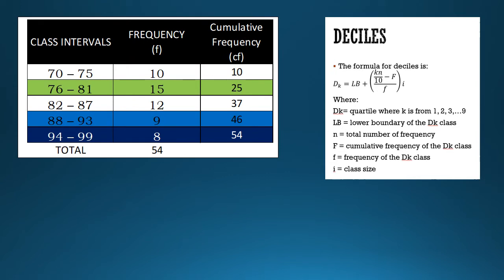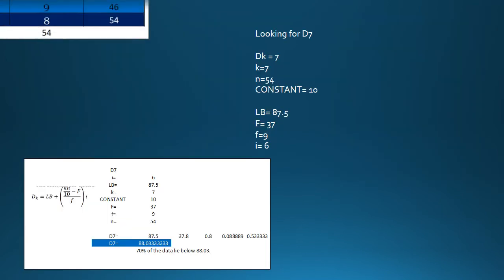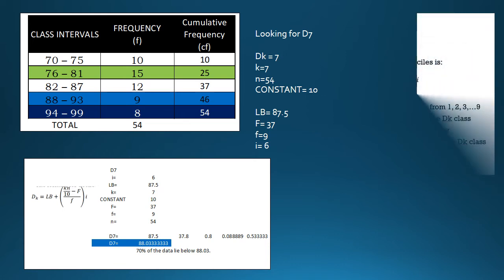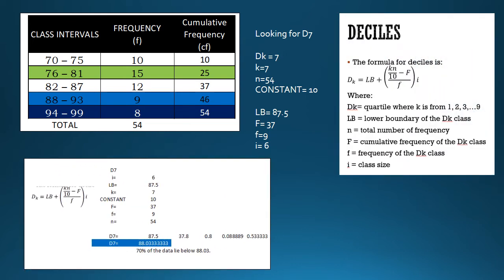Now let's solve for the decile. For decile, the formula is D sub k equals lb plus, open parenthesis, k times n divided by 10, minus F, divided by f, close parenthesis, times i. The constant changes from 4 to 10. We are looking for D sub 7, so k = 7, and n = 54. Compute: 7 times 54 divided by 10 = 37.8.